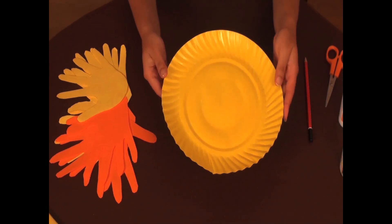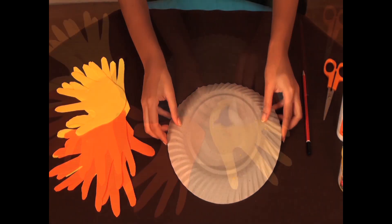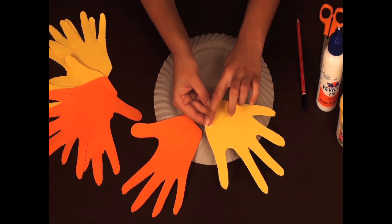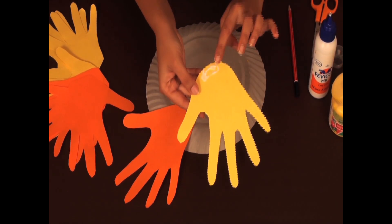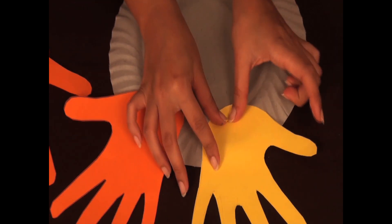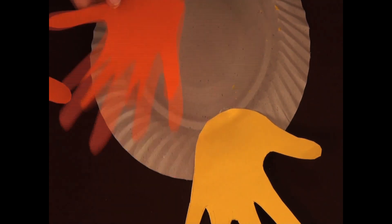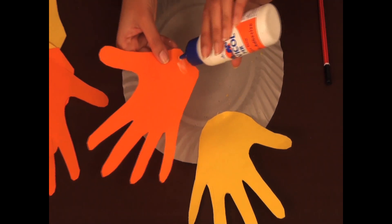Now turn the painted plate over and start attaching the rays. Take a little bit of glue, spread it and press it down firmly. What I like to do is use yellow and orange rays alternately, but you can work out your own pattern.